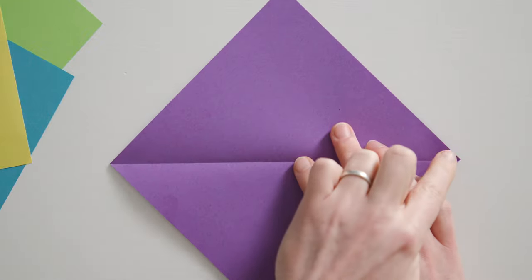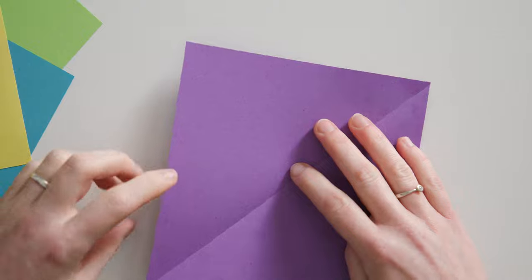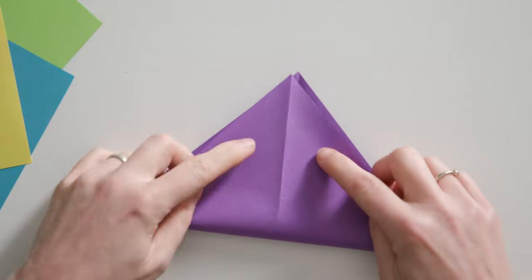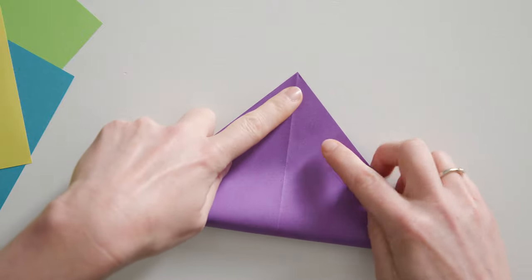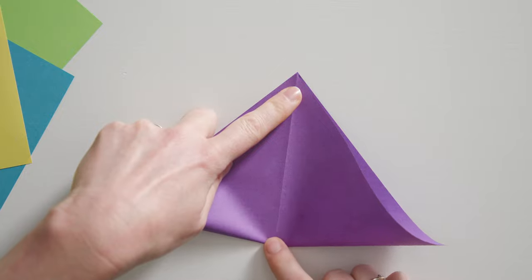Now place this corner on top of this corner, but do not make a folded edge. Place the corners exactly on top of each other and only press the paper flat here in the middle where our long folded edge is.